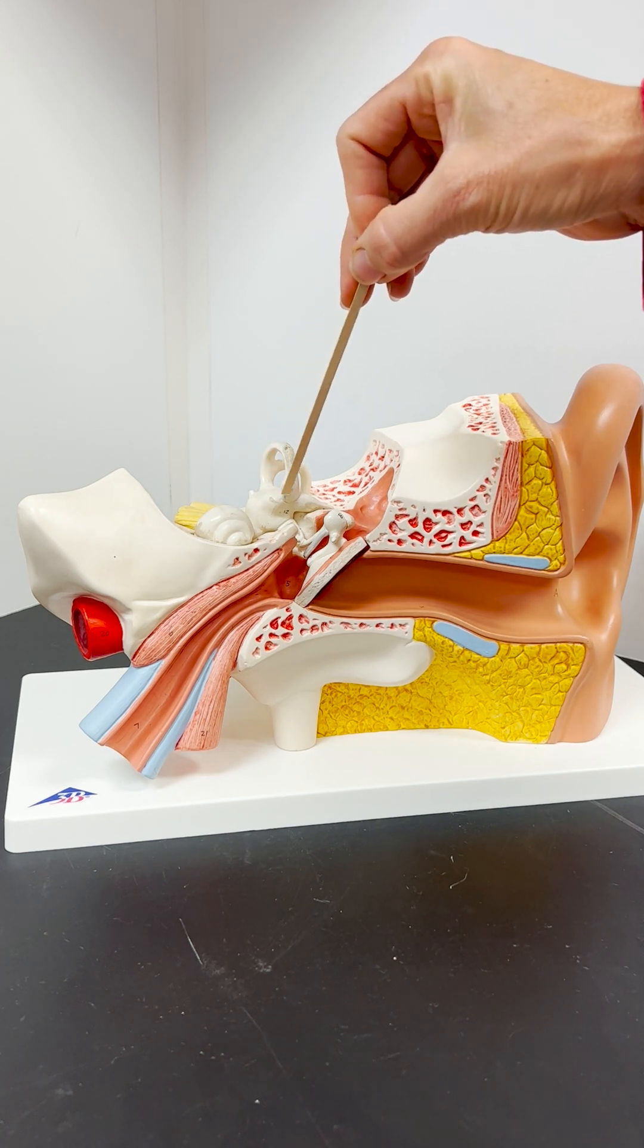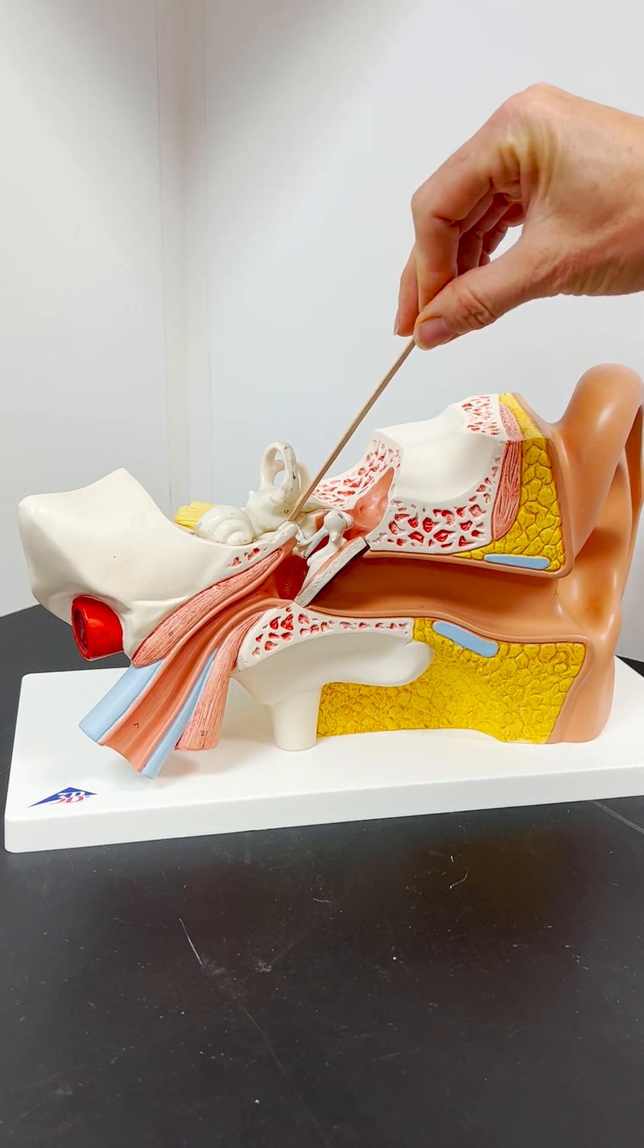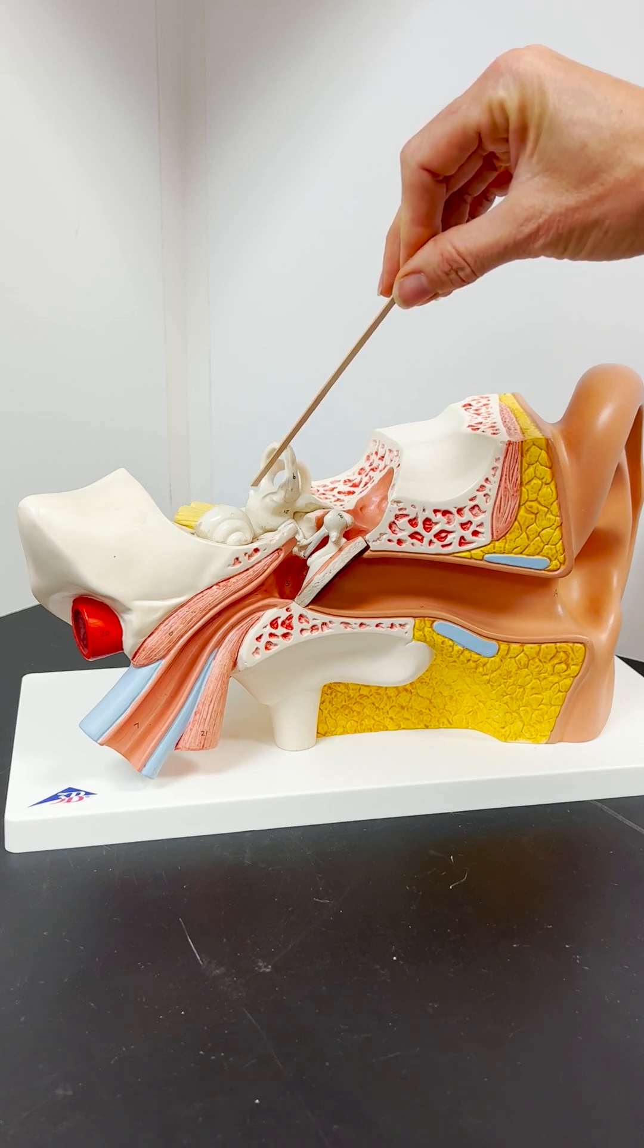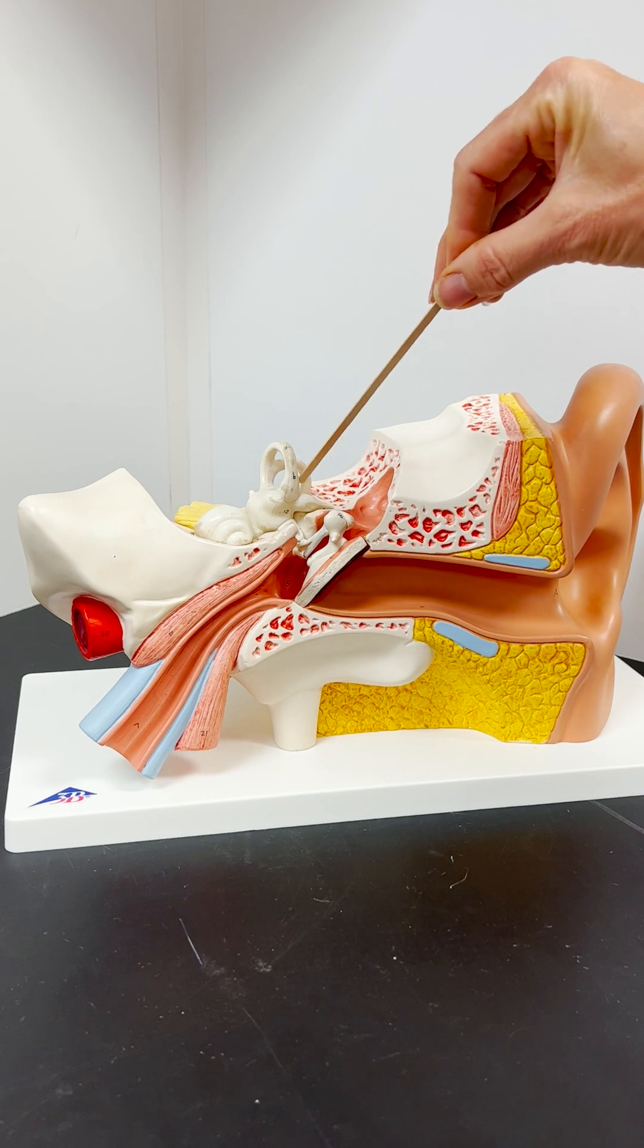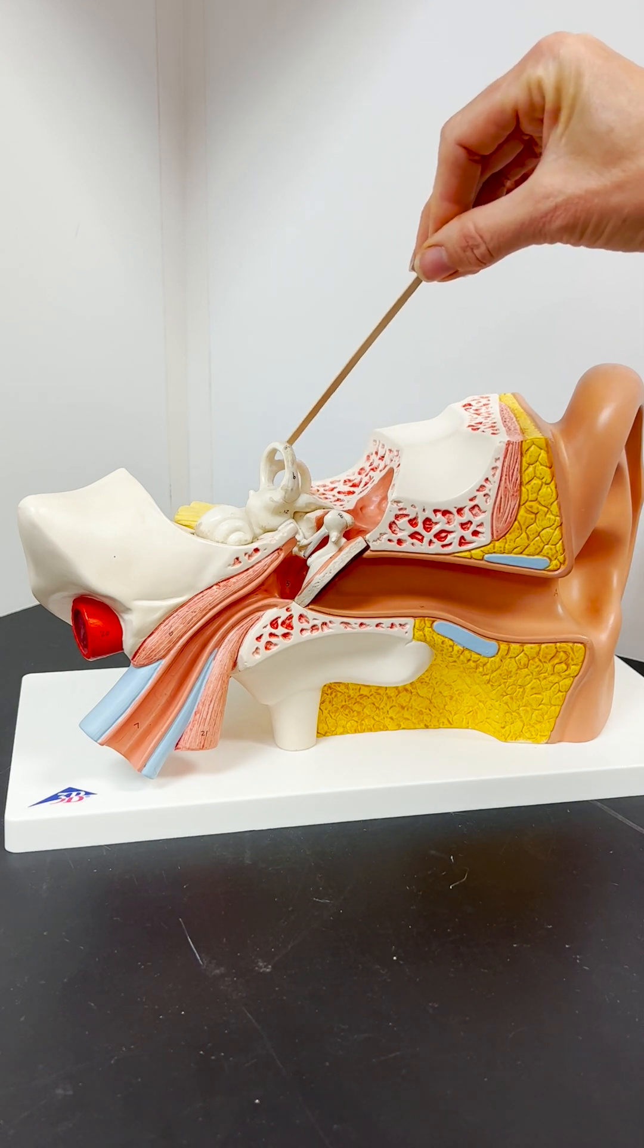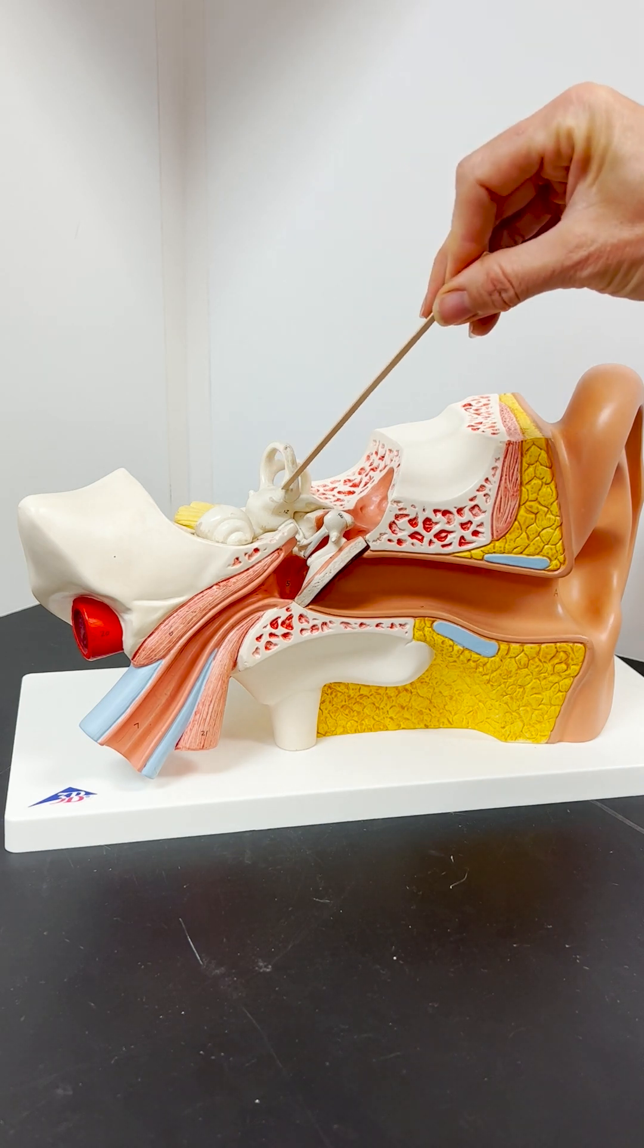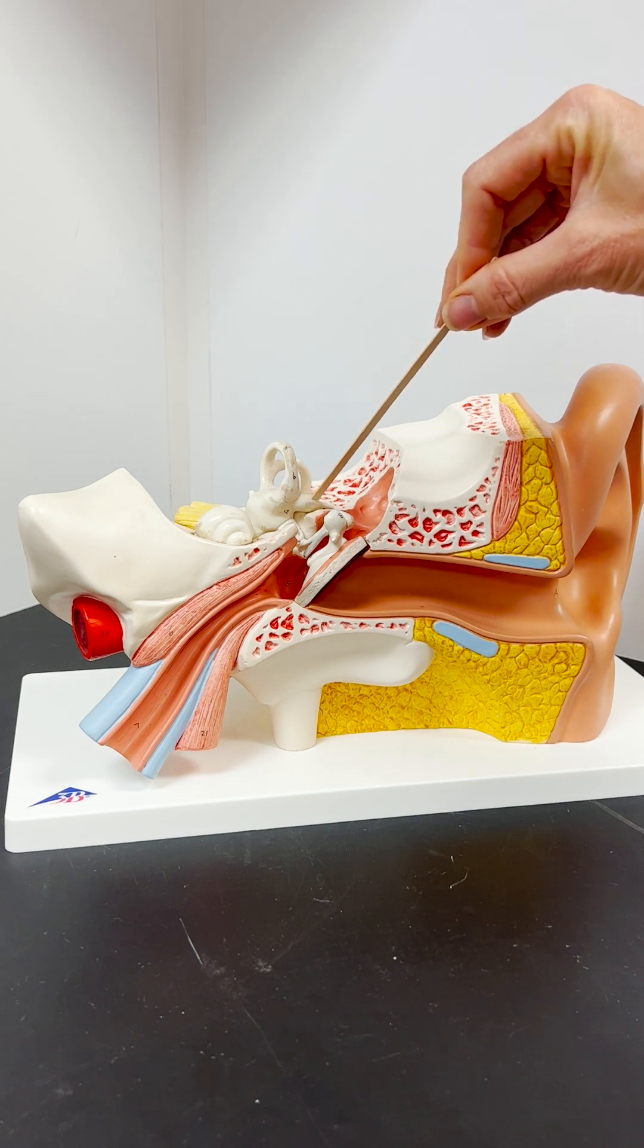The vestibule receives those sound waves initially due to the stapes attachment at the oval window. The semicircular canals are structures that function in equilibrium and balance, and at the end of each of those, there's a little swelling or bulb called an ampulla.